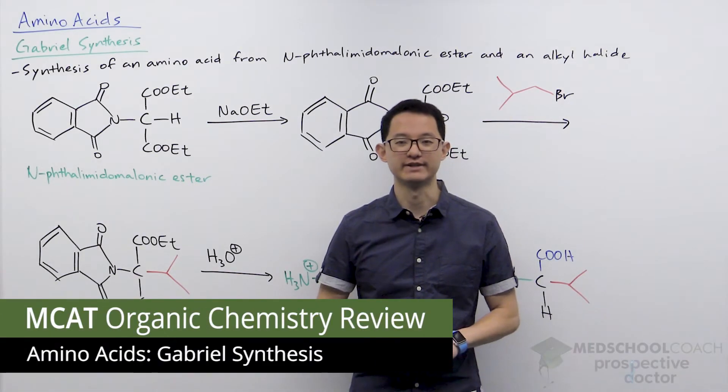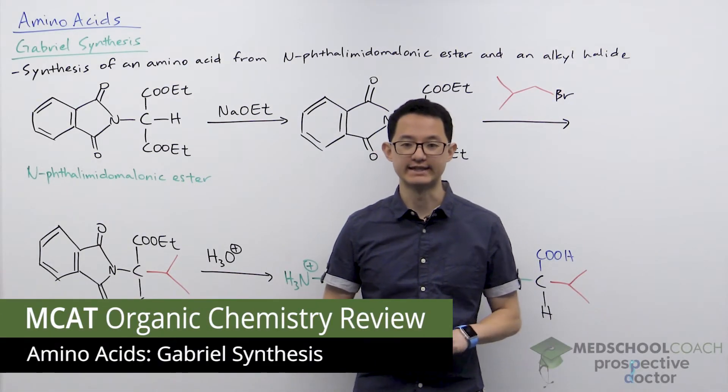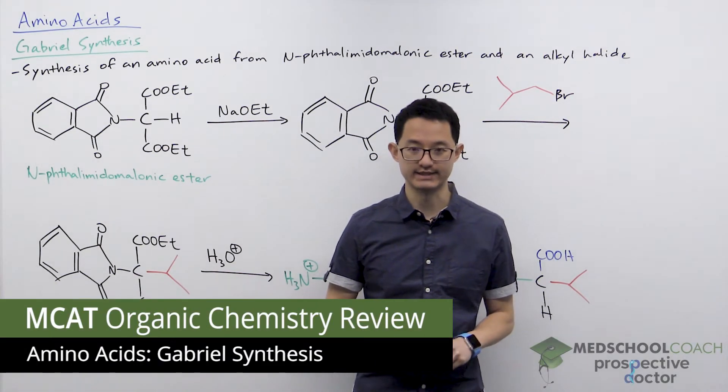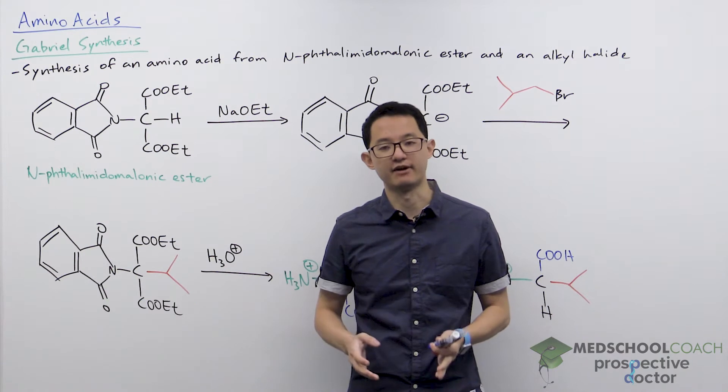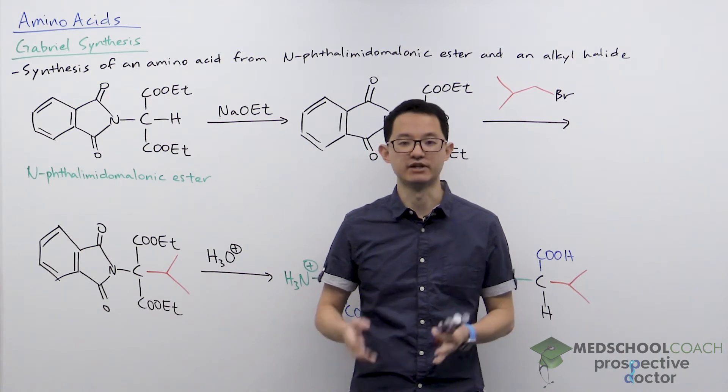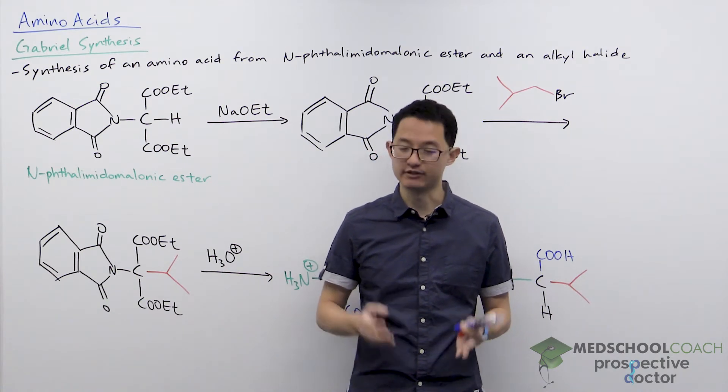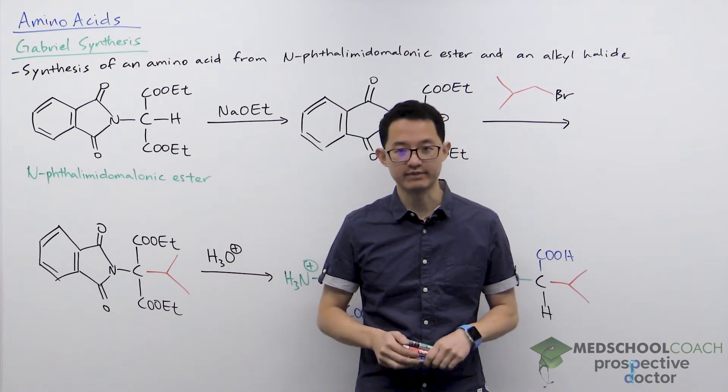In this video we're going to discuss the Gabriel synthesis. This is the second type of making amino acids that you need to know for the MCAT.